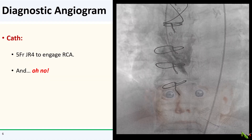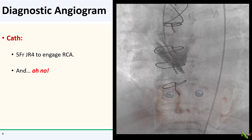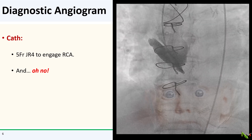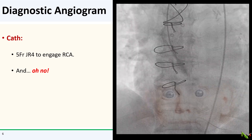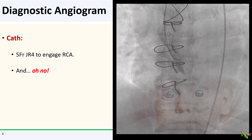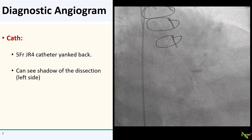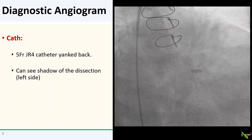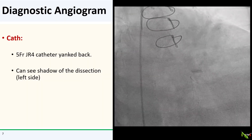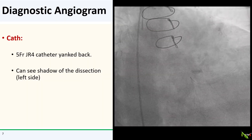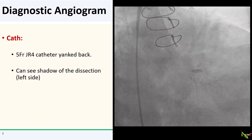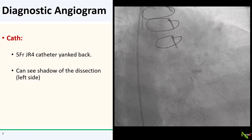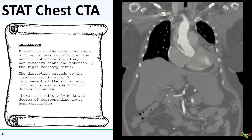I switched to a diagnostic JR4 intending to shoot the RCA and find the grafts. My first shot of the RCA showed definitely not something I expected to see or want to ever see in the cath lab — an ascending aortic dissection. I instinctively yanked my catheter back right away. You can see the shadow of the aortic dissection on the left side of the aorta. We stopped the procedure and I called cardiac surgery. Remember, we are at a community hospital, so it's going to take a while to get her down to the tertiary center.